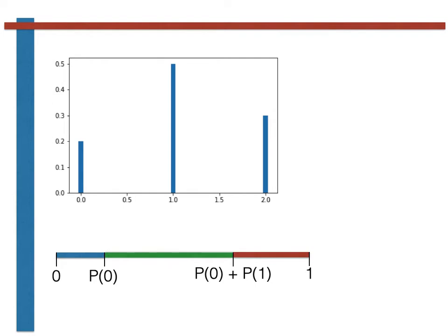Notice importantly that the blue segment of the line has a length proportional to the probability of getting a zero, the green part has a length proportional to the probability of getting a one, and the red part has a length proportional to the probability of getting a two.